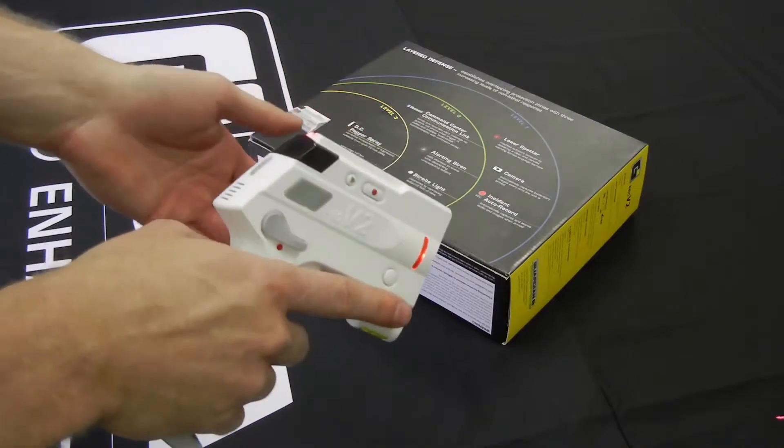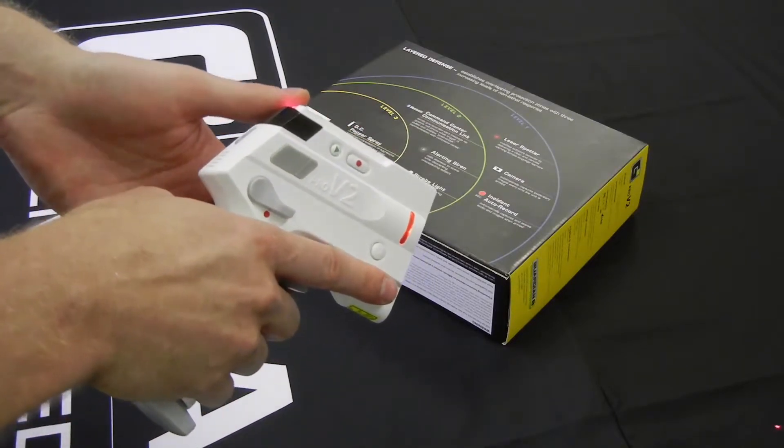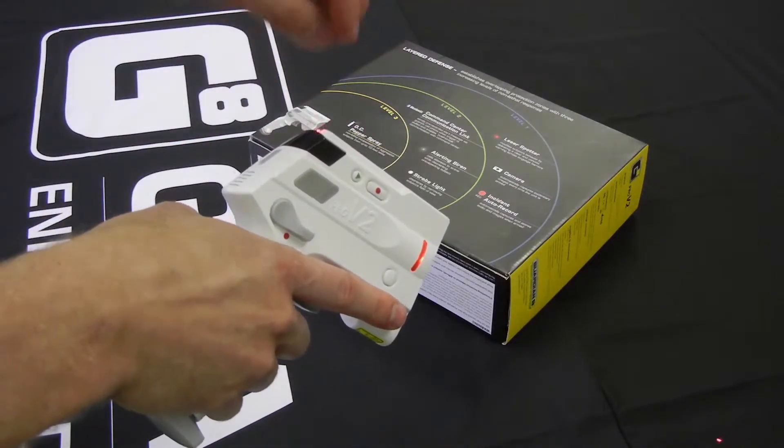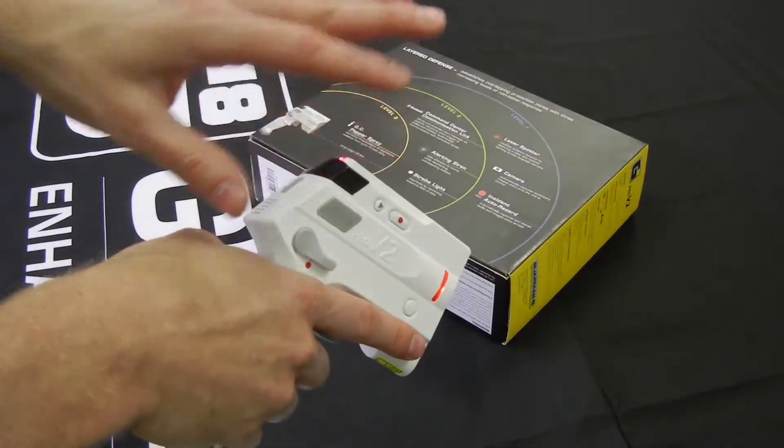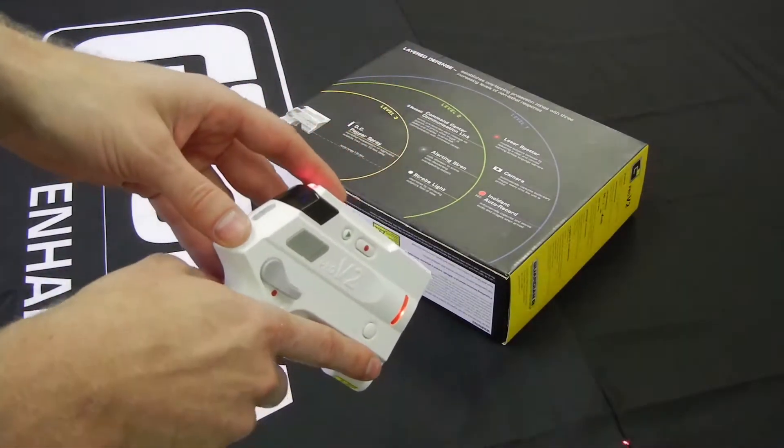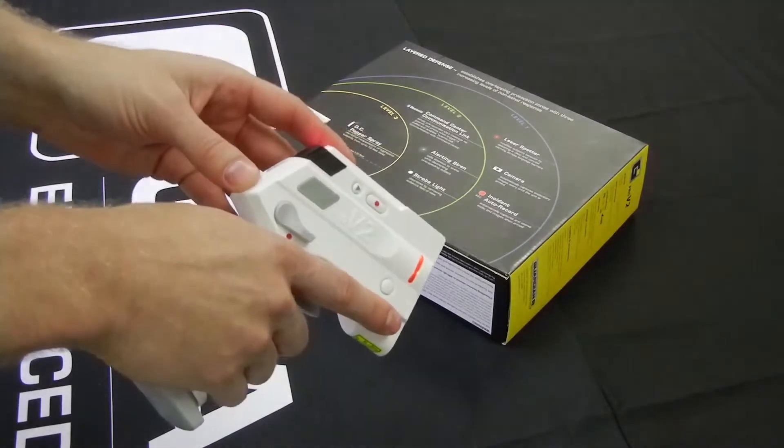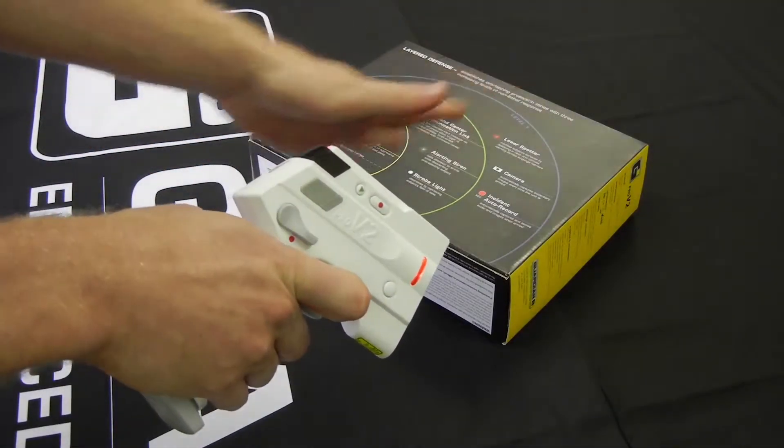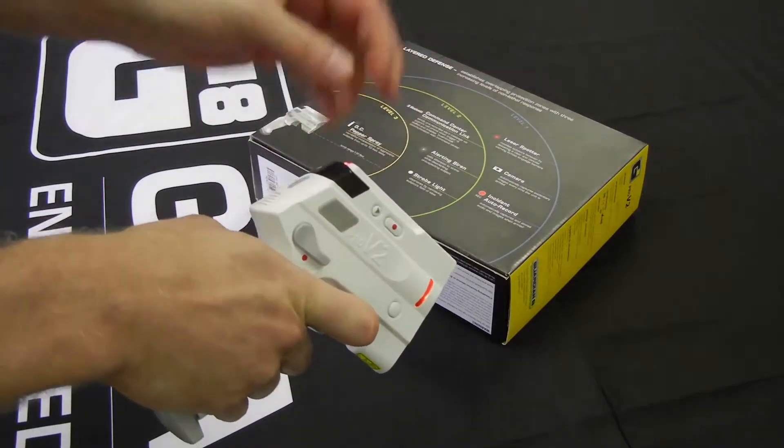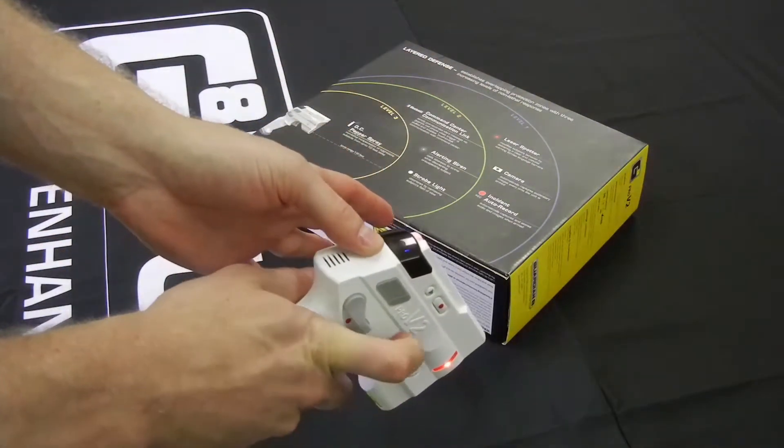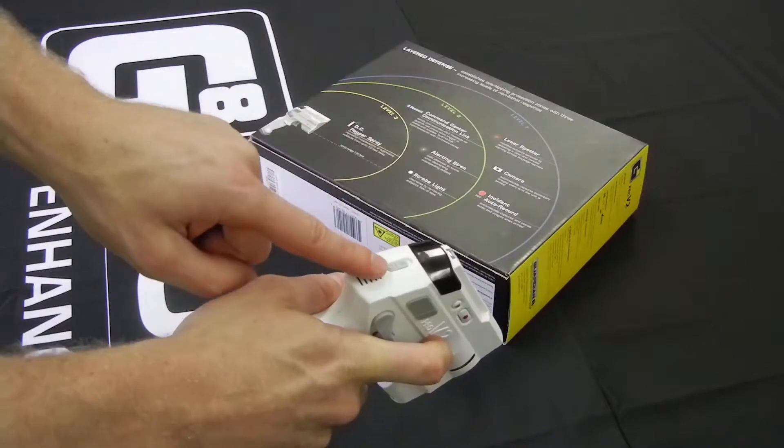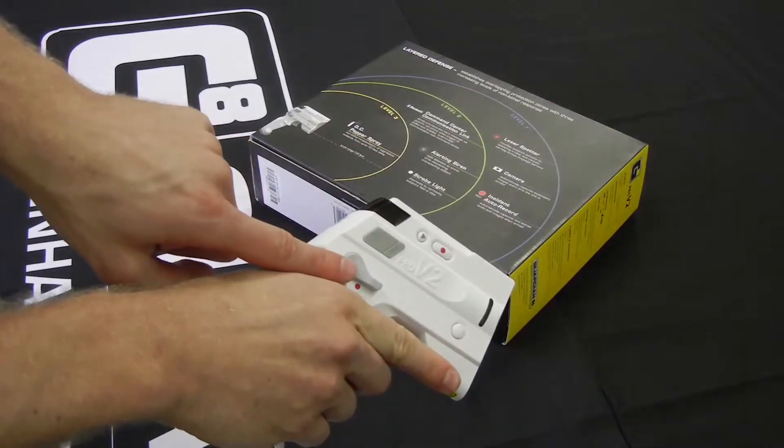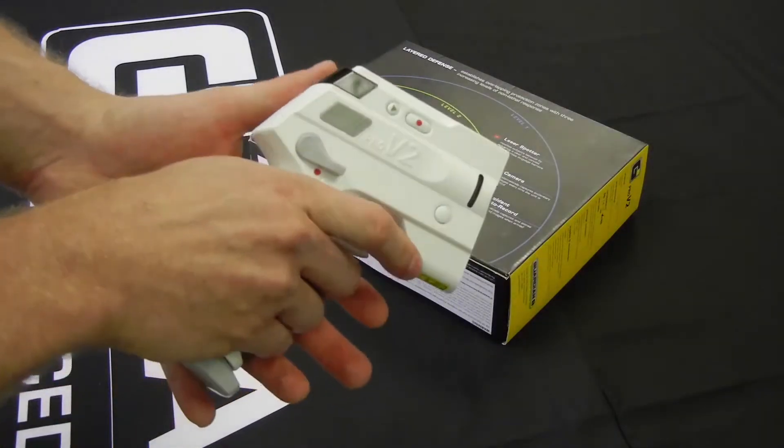Now I installed a practice canister in here. So what I'll do is I'll show you the manual way to deploy OC without power. That's an added safety feature that's on this device. Because right now I could fully pull this trigger and I would activate all three levels at once. But OC by itself can still be activated if I power the unit off but still have it armed. Watch what happens.